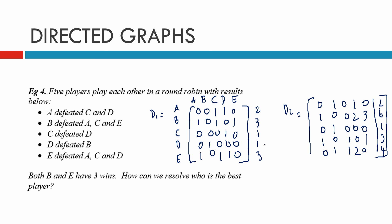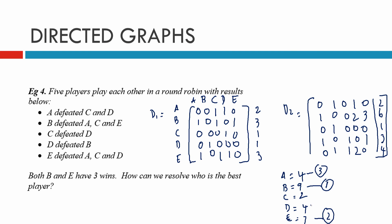Adding D1 and D2 totals together: A gets 2+2=4, B gets 3+6=9, C gets 1+1=2, D gets 1+3=4, and E gets 3+4=7. Ranking the players: B is the top player with a dominance score of 9, E is second with 7, A and D are equal third with 4, and C is the bottom-ranked player with a score of 2. So B is the best player.